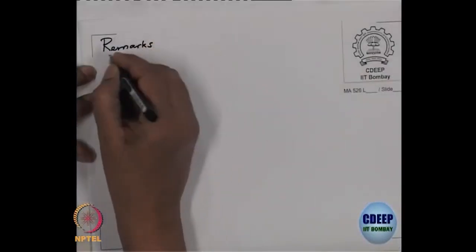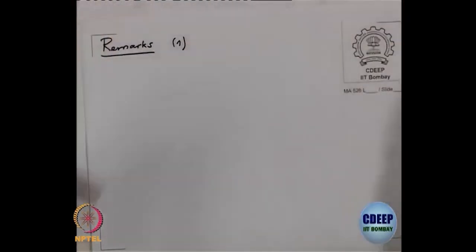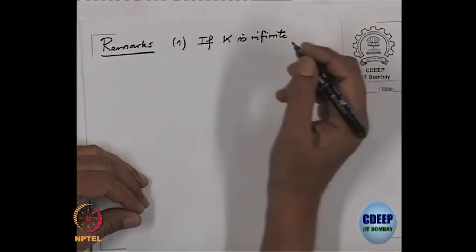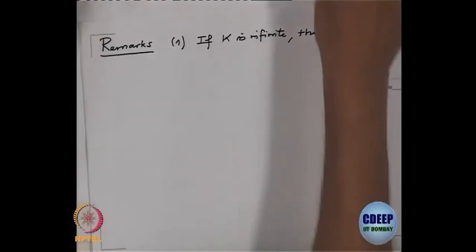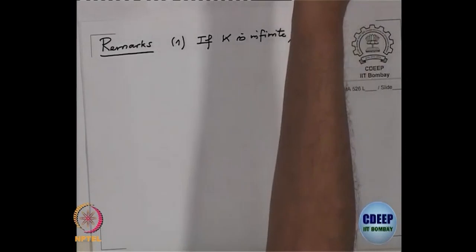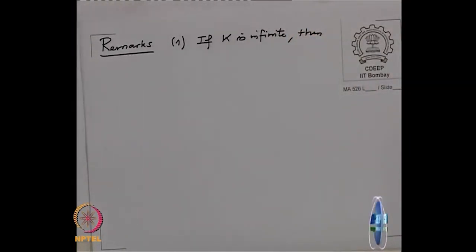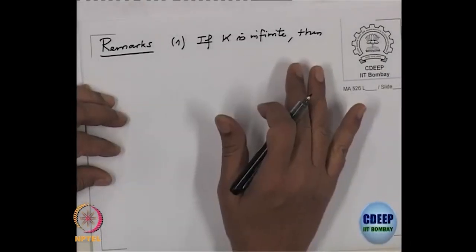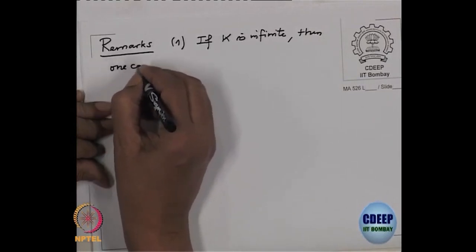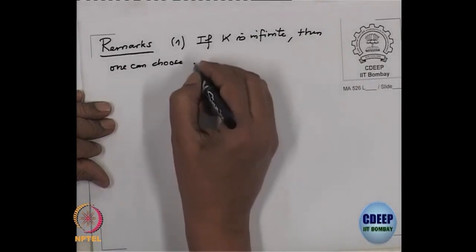Okay, so the first remark is: In this proof we have never used any special structure of the field K, whether it is finite, infinite, and so on. It works for arbitrary field. Moreover, if you assume that K is an infinite field, then this change of variables - the automorphism we have defined - was not linear because it depended on the gammas. But in case of infinite field, one can choose linear change of variables.